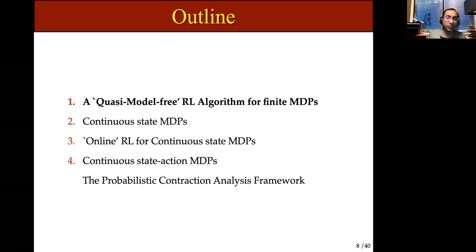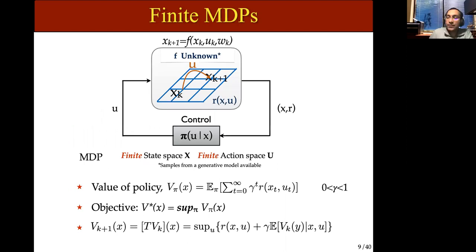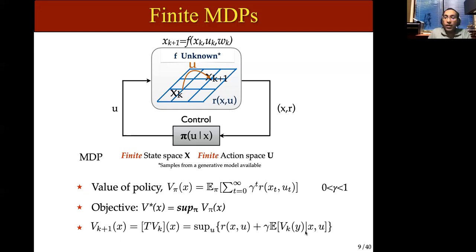Let me talk about the finite MDP problem. The same setting: both state and action spaces are finite, the transition model F is unknown, but we have access to a generative or simulation model. This problem can be solved by doing value iteration, where the second term is the expectation with respect to the next state Y given current state X and U, and samples of the next state can be obtained from a simulator.